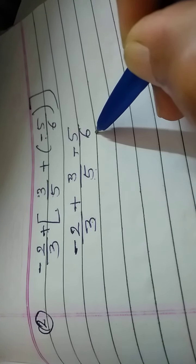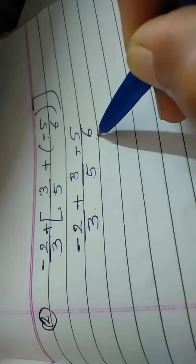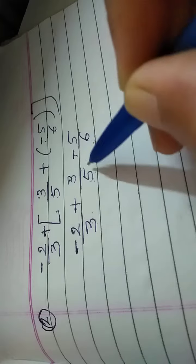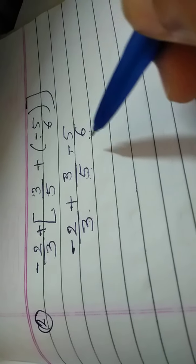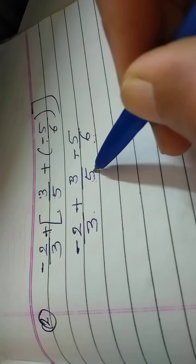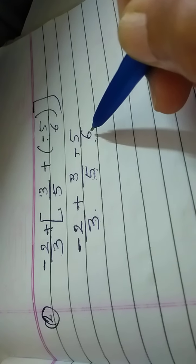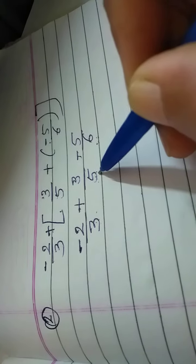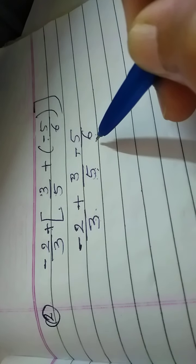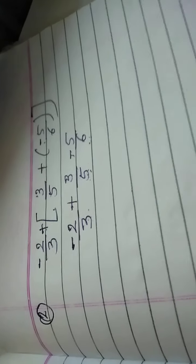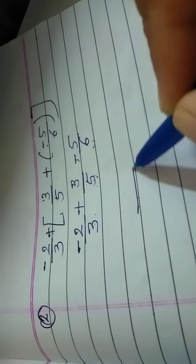The LCM of 3, 5 and 6: 3 and 6 have common factors but 5 and 6 don't. So we take the biggest number, 6, and check its table. 6 ones are 6 — does 6 come in the table of 5? No. 6 twos are 12? No. 6 threes are 18? No. 6 fours are 24? No. 6 fives are 30 — yes, 30 comes in the table of 5. So 30 is the LCM of 3, 5 and 6. We write 30 as the denominator.